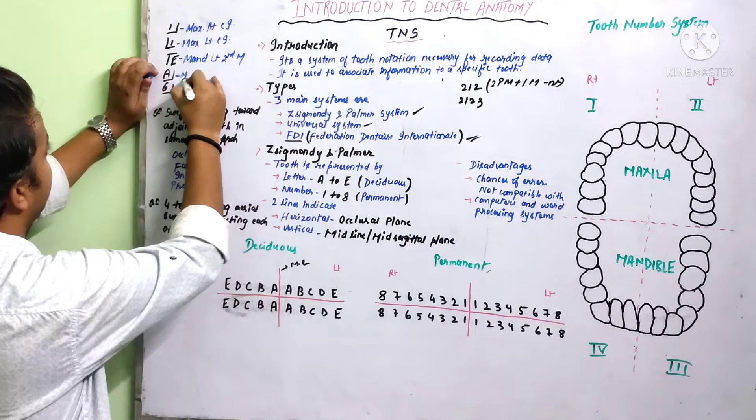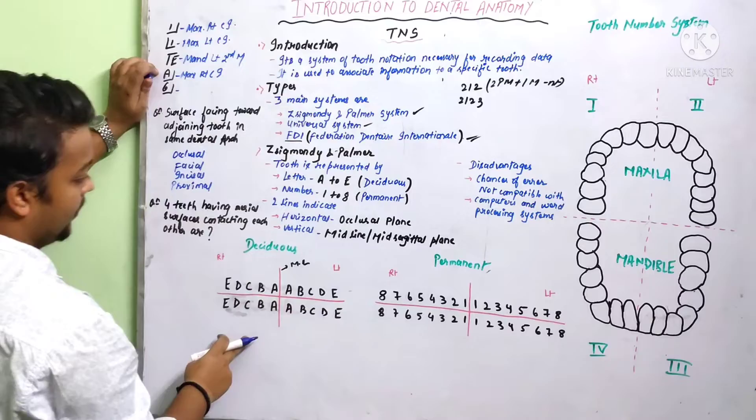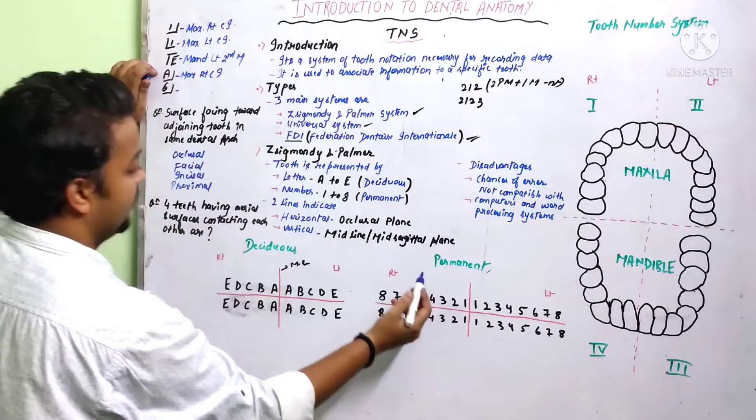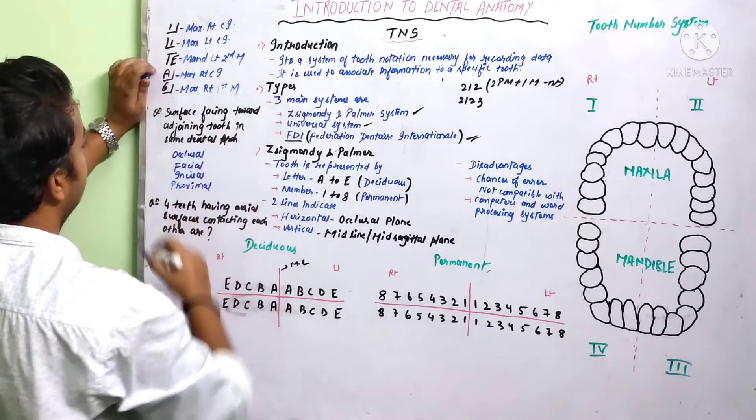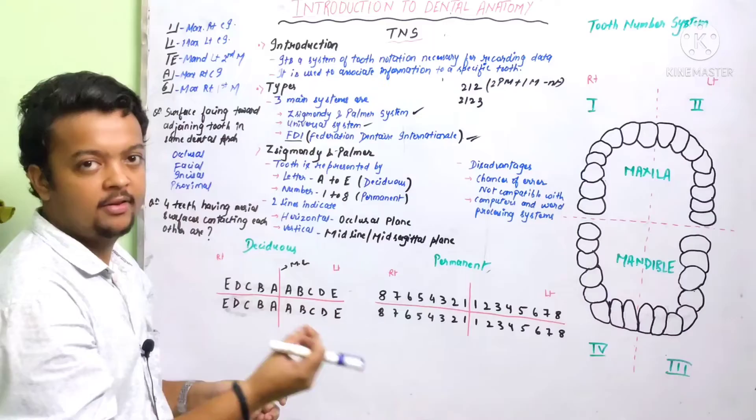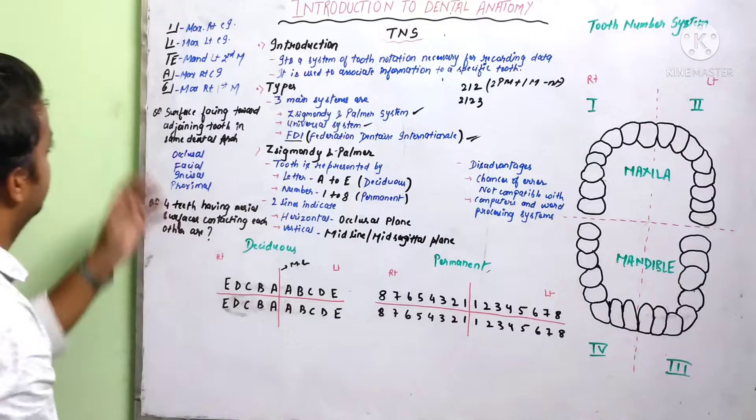For the permanent number 6: starting from central incisor, lateral, canine, first premolar, second premolar, and the sixth is the first molar. So this becomes maxillary right first molar. The name of each tooth should be remembered in order: central, lateral, canine, first premolar, second premolar, and first, second, and third molar.